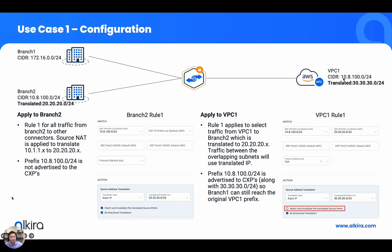Note that 'match and validate pre-translated source prefix' is not checked for VPC one, because we want Elkira to advertise both 10.8.100.0/24 and the translated prefix to the rest of the network. So for traffic from VPC one going to branch one, nothing changes — it comes from 10.8.100.0 going to 172.16.0.0/24. For traffic from VPC one going to branch two, it will source from 30.30.30.0 going to 20.20.20.0.